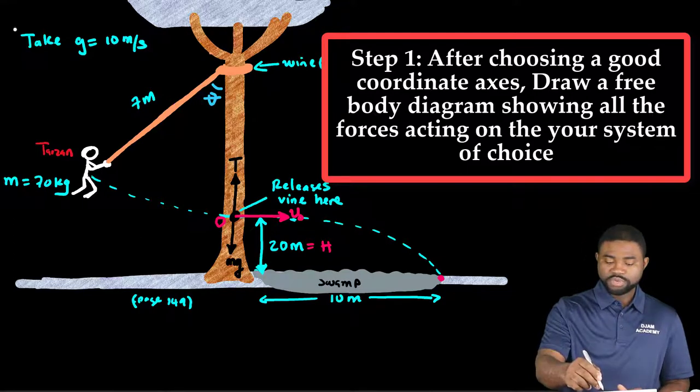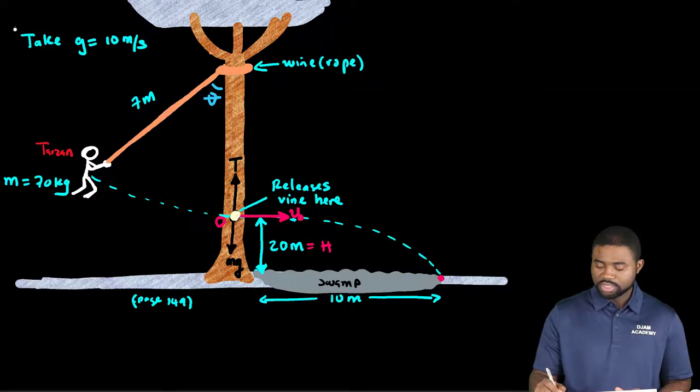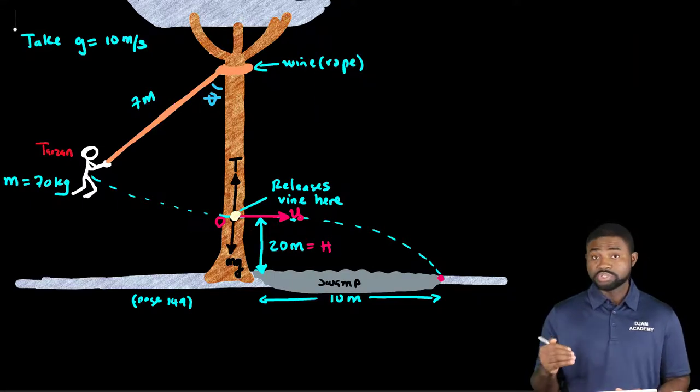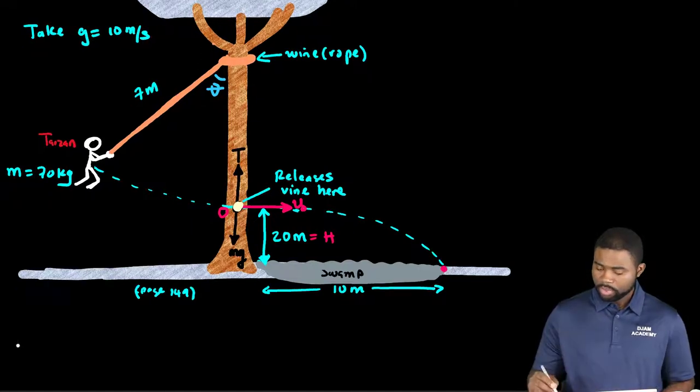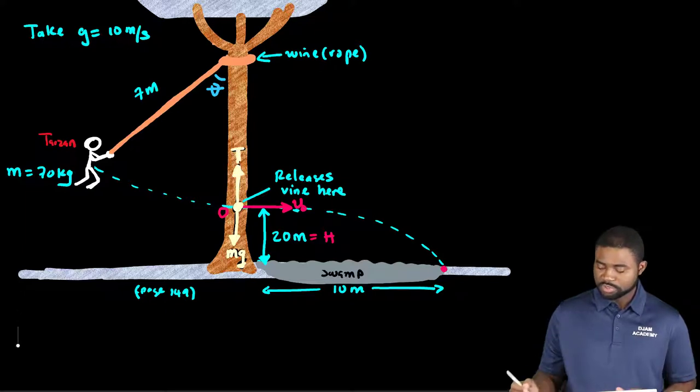So if we do a free body diagram, we've been asked to calculate the tension just below the support where he lets go. We have his weight which acts vertically downwards. We have the tension in the string which acts vertically upward at this particular moment.